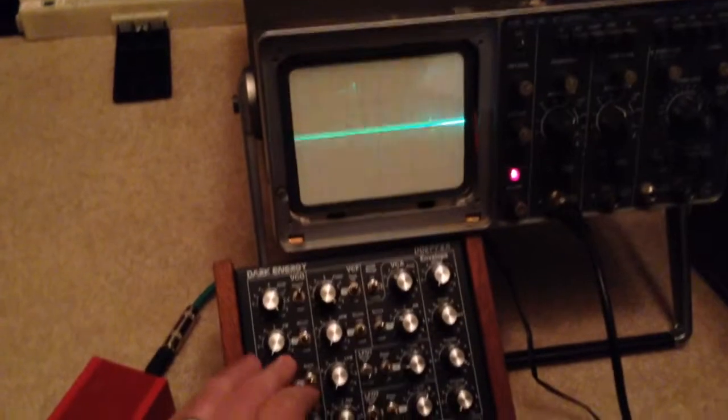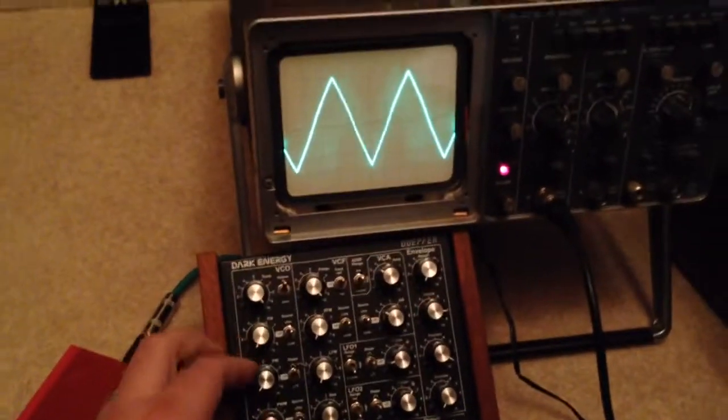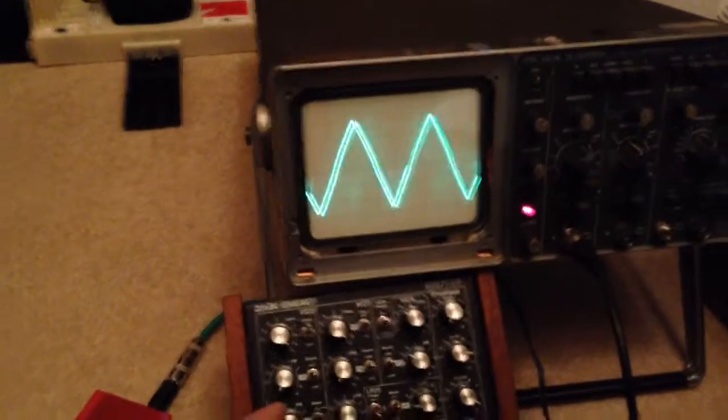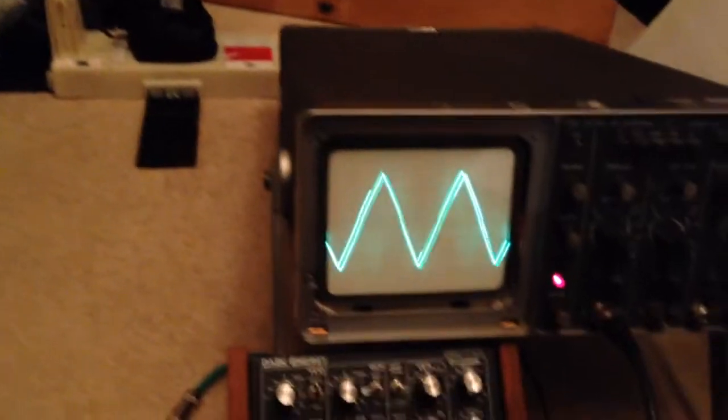So now, I'm going to turn it back down to 0, and I'm going to switch it to triangle, and that's a beautiful triangle. What you would expect from a triangle core oscillator.